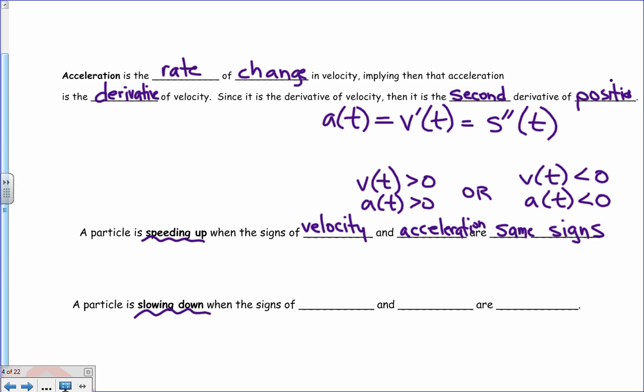Now, a particle is slowing down when the signs of velocity and acceleration are different. Then you will have a particle slowing down. That is our summary of position, velocity, and acceleration.